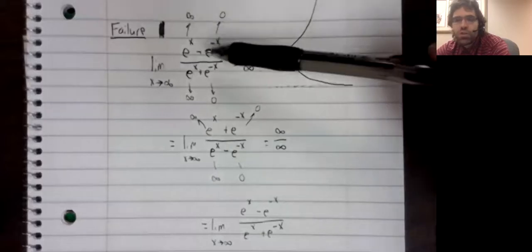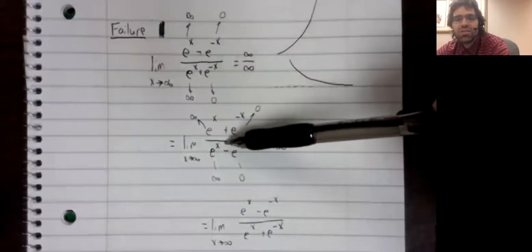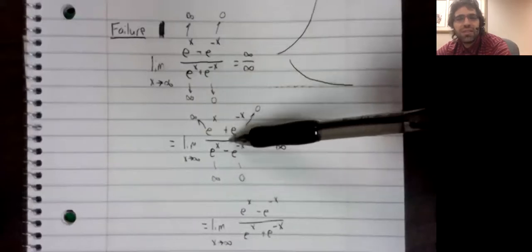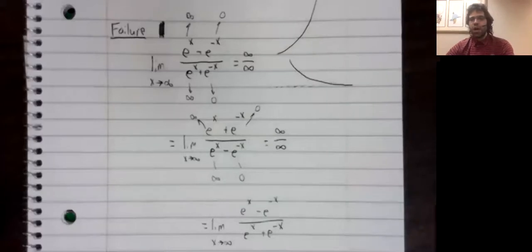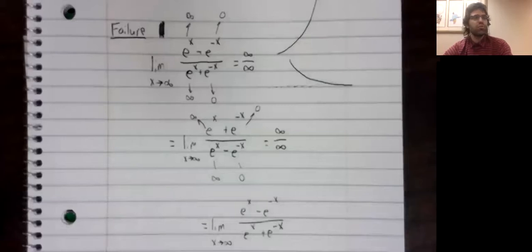What do I care that this limit equals this limit if I can't figure out what this limit is? There are ways we might approach this problem not using L'Hôpital's rule, but all I want from this example is an illustration of how L'Hôpital's rule might fail to be useful.